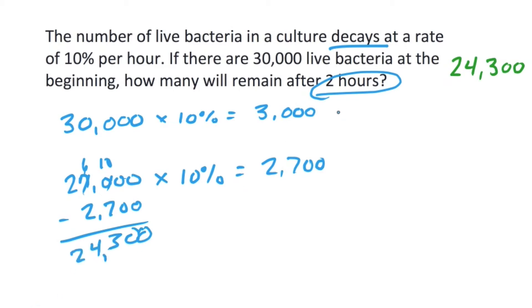If there was a third hour, we would simply repeat the process again until we've done everything the problem has asked us to do. But for this question, they only ask us to do it twice. So our answer is 24,300.